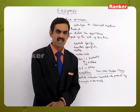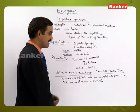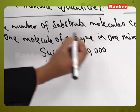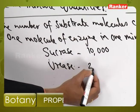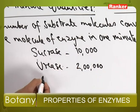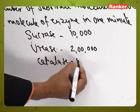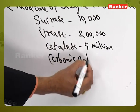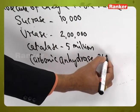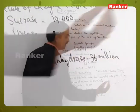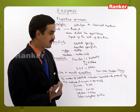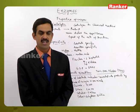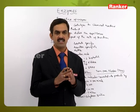Different enzymes have different turnover numbers. The turnover number of sucrase is 10,000. Urease has a turnover number of nearly 2 lakhs. Catalase has a turnover number of 5 million. Carbonic anhydrase has a turnover number of 36 million. Based on the turnover number, we can determine the ability of an enzyme to convert substrates into products at a faster rate.